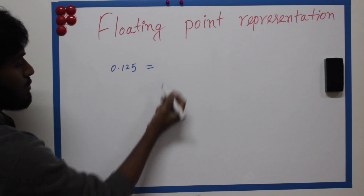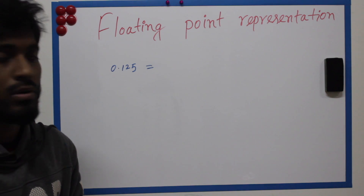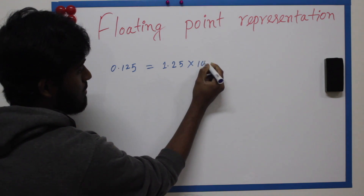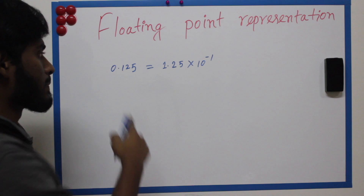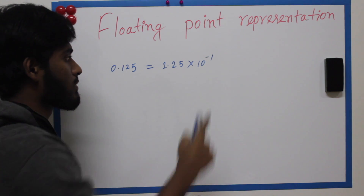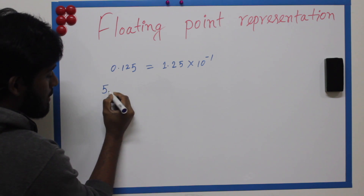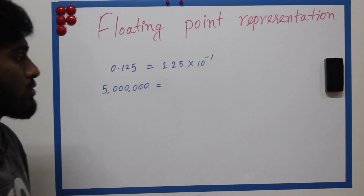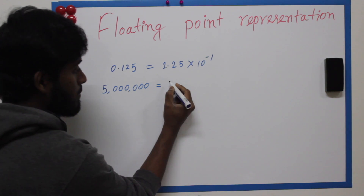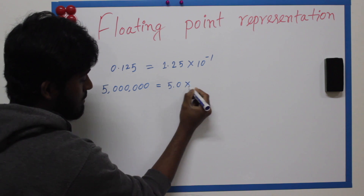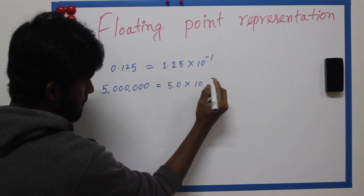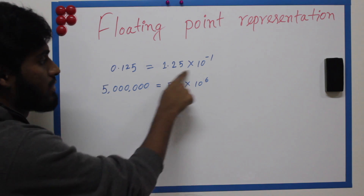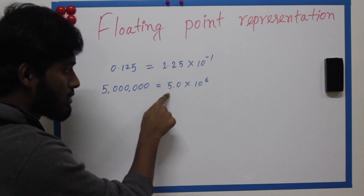We need to represent the scientific notation. We need to represent 1.25 times 10 to the power of minus 1. This is the scientific notation.